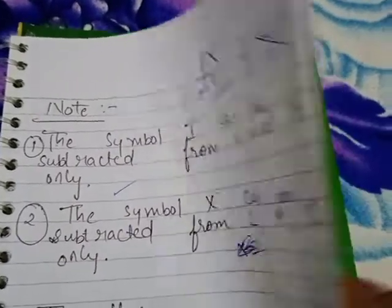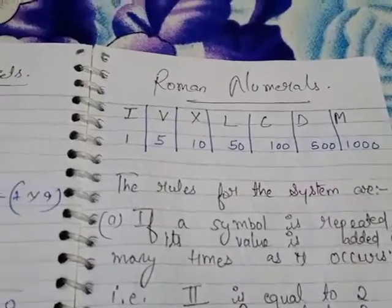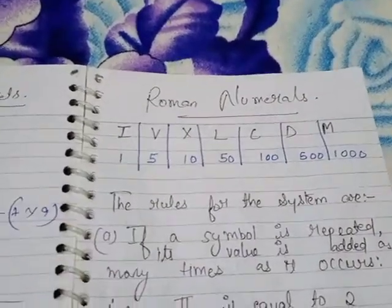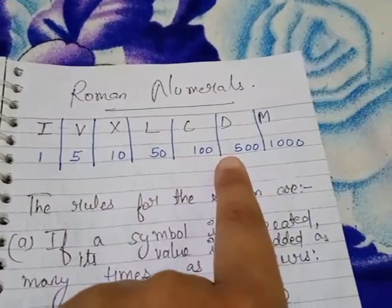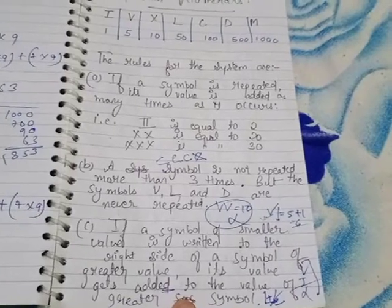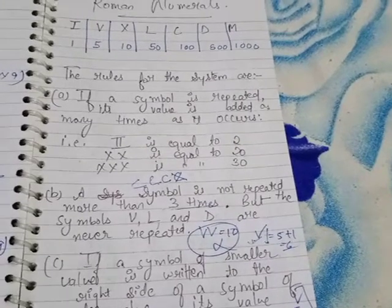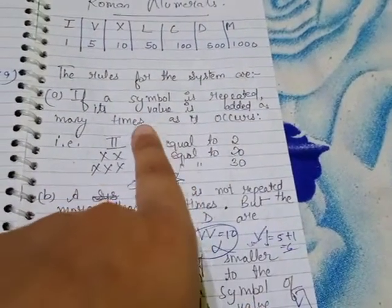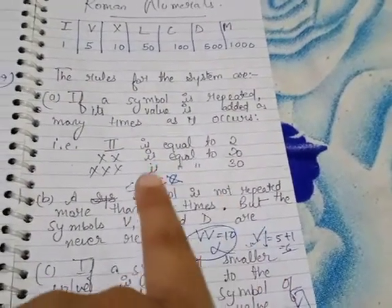All the rules I have told you — go through all the notes again and then we will do the Roman number solutions. A small recap: here are the important Roman numbers to keep in mind, and the five general rules for Roman numerals. Note down all the rules in your copy. First rule: when a symbol is repeated, its value is added.